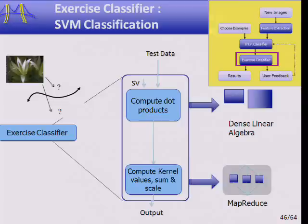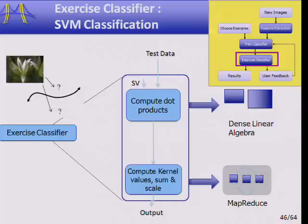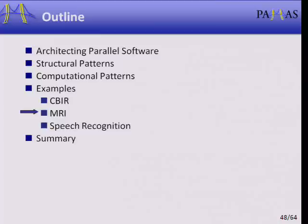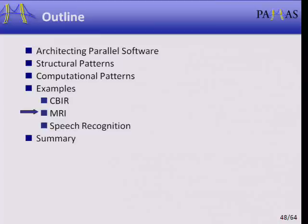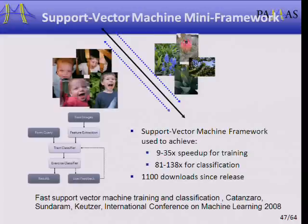In the exercise classifier, we get a new image, compute dot products to determine which side of the fence it should be on, and compute values that tell us is this more like a flower or a baby. Computing the dot products is dense linear algebra, and computing the kernel values, sum, and scale is MapReduce over a simple dense linear algebra operation. This is our whole support vector machine architecture. Methodically going through this, we were able to build an SVM mini-framework that achieved 9 to 35x speed-up on the training portion, and 81 to 138x for classification. The software has had 1,100 downloads since its release about two years ago.